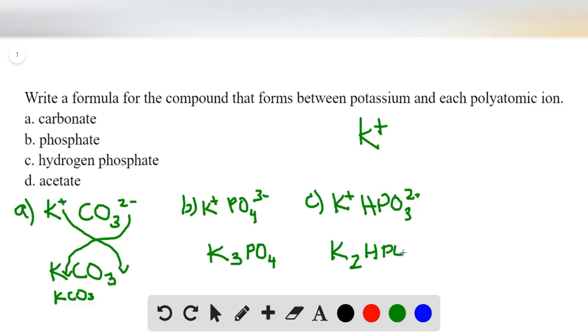So for D, we have acetate. Acetate is CH3COO, and it's negatively 1 charge. So there's need for one of each, KCH3COO, and that's your formula.